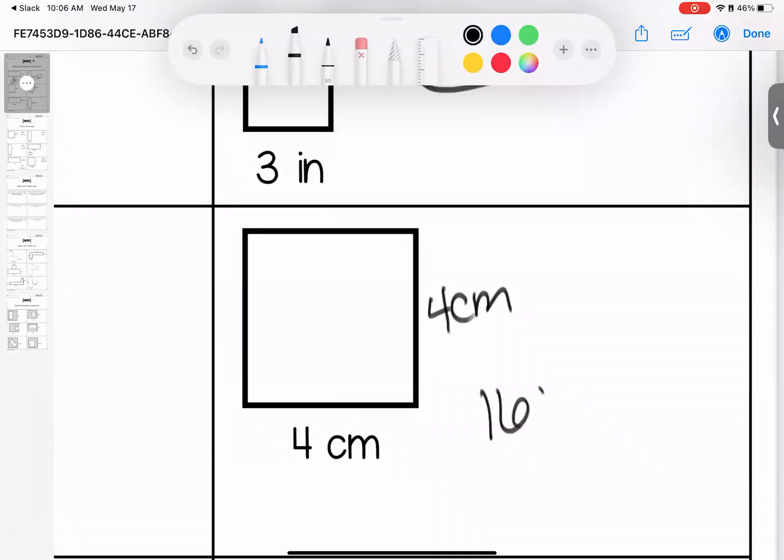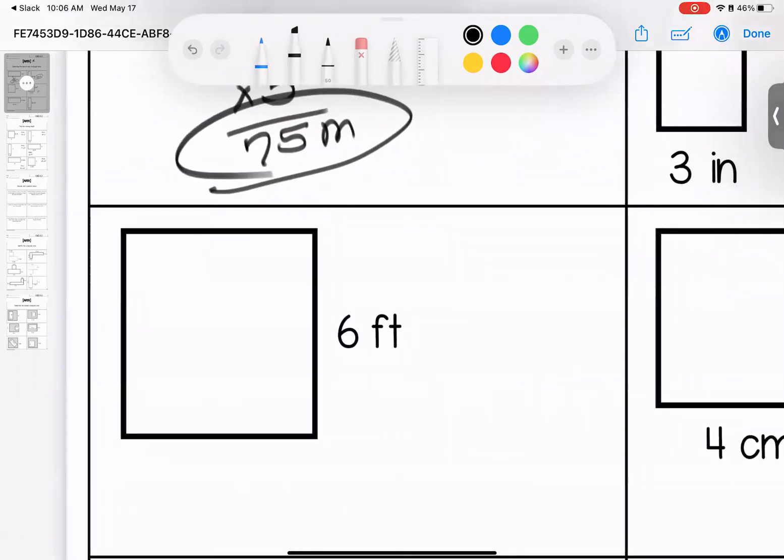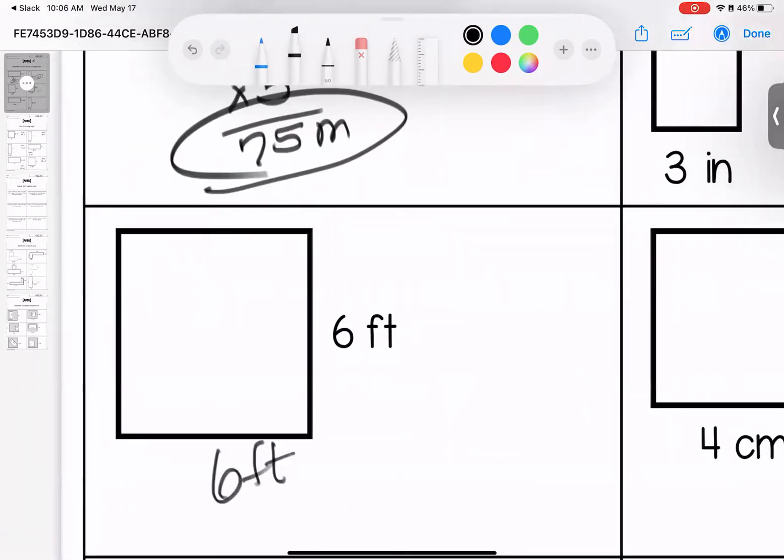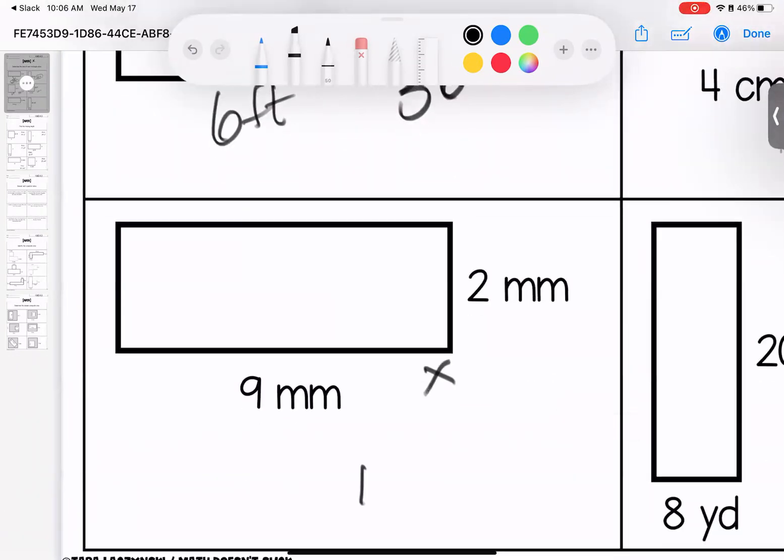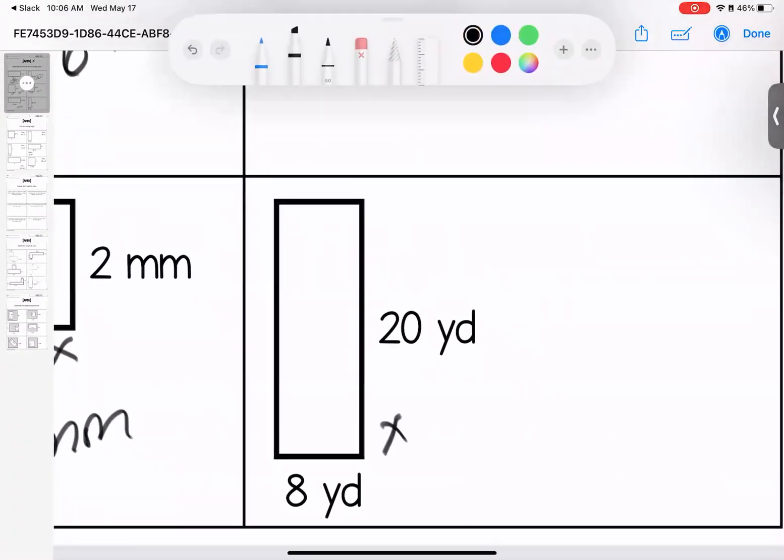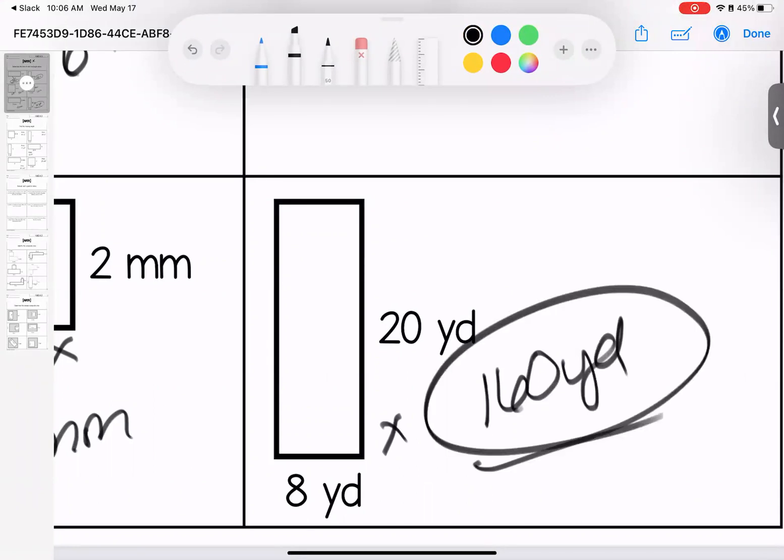16 centimeters. Again it's a square, so all sides are the same. 36 feet. Down here, 9 times 2 is 18 millimeters. And 8 times 20, 8 times 2 is 16, add your zero, 160 yards. Any questions, bring them with you to class.